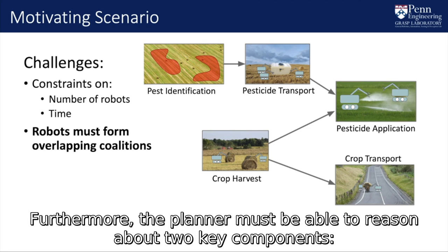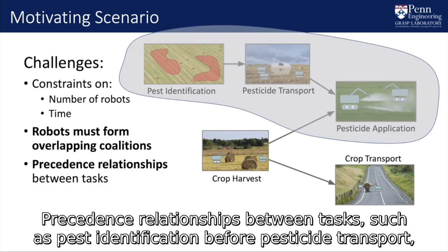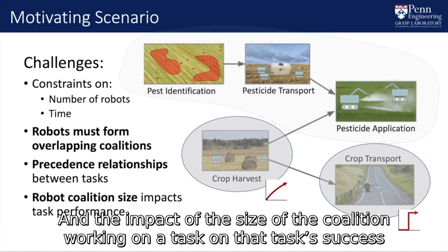Furthermore, the planner must be able to reason about two key components: precedence relationships between tasks, such as pest identification before pesticide transport before pesticide application, and the impact of the size of the coalition working on a task on that task's success.